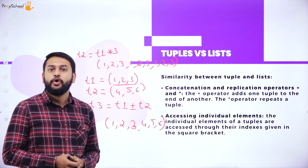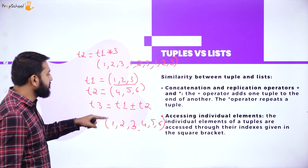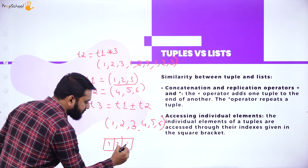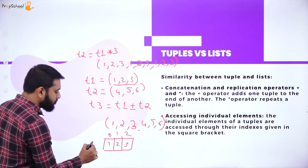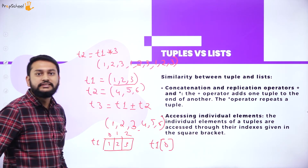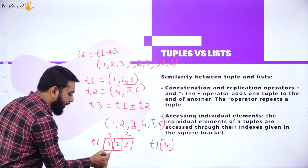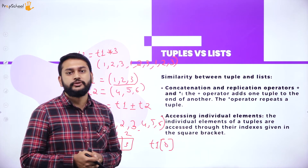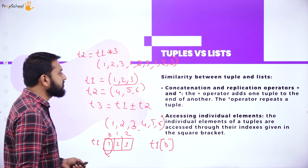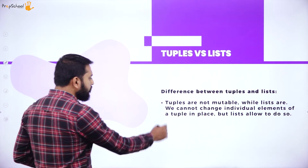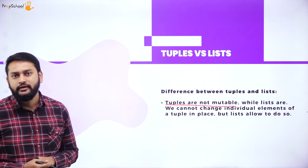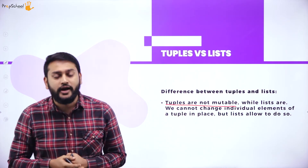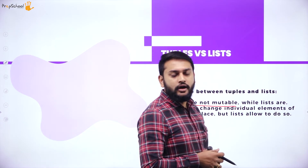You can also access individual elements inside a tuple using the index. For example, consider tuple t1 with values 1, 2, 3 — in memory these have indices 0, 1, 2. If I write t1[0], I am accessing index 0, which gives me 1. This is how you access elements inside a tuple. Moving on to tuple versus list: tuples are not mutable. Tuples will not allow you to replace elements, but a list will — that is one key concept to remember.